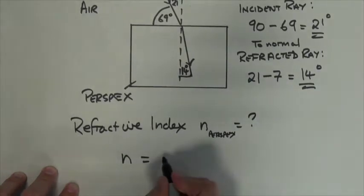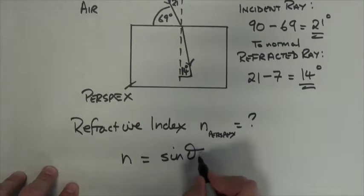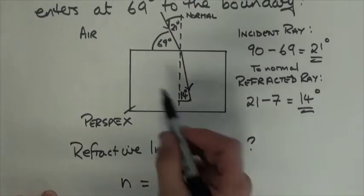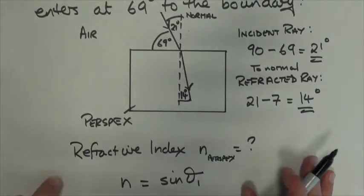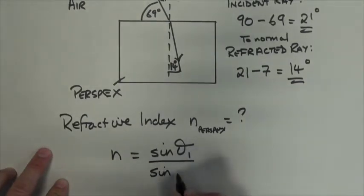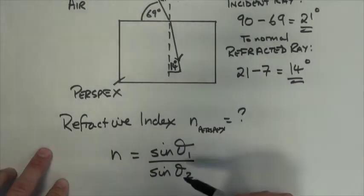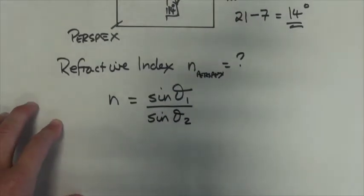So n will equal sine theta 1, which is the incident ray. There we are, 21 degrees. That's going to be sine theta 1 divided by sine theta 2, which is the refracted ray, which in this case theta 2 is going to be 14.